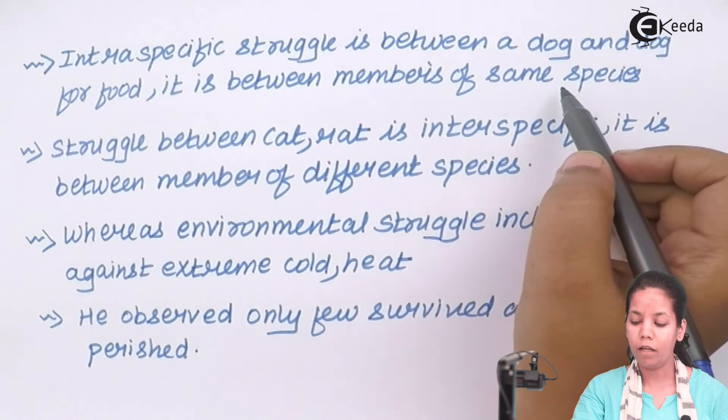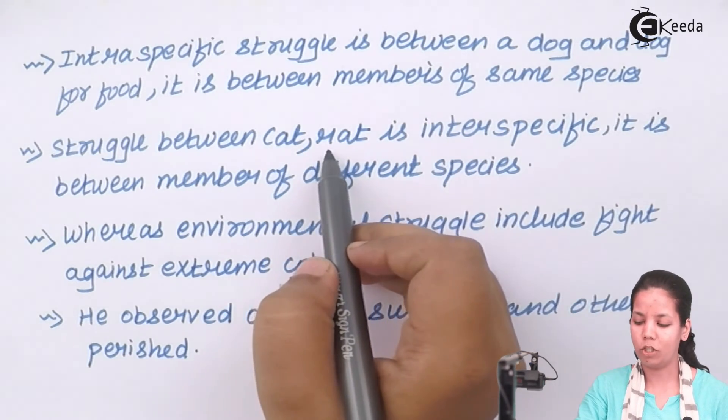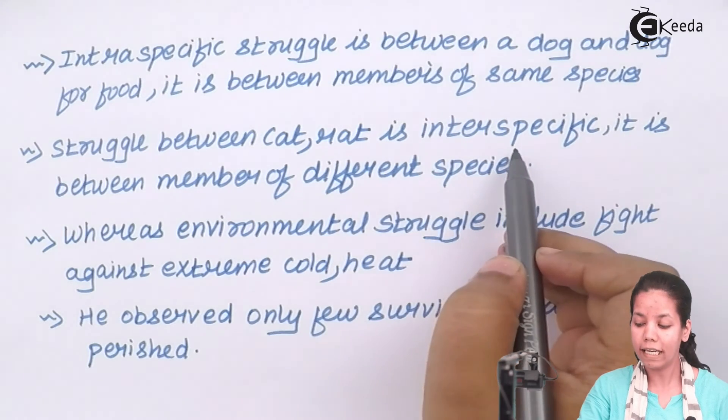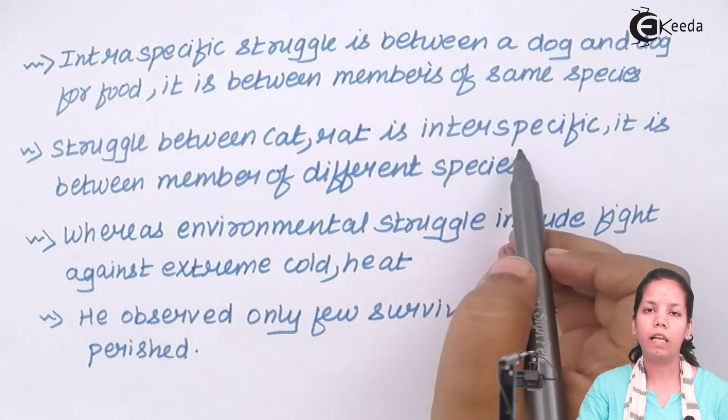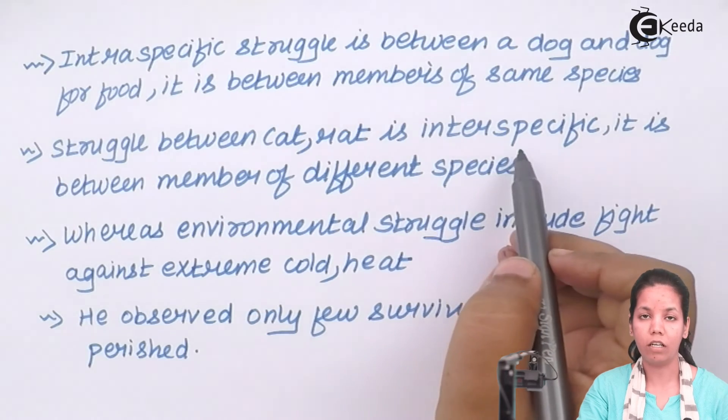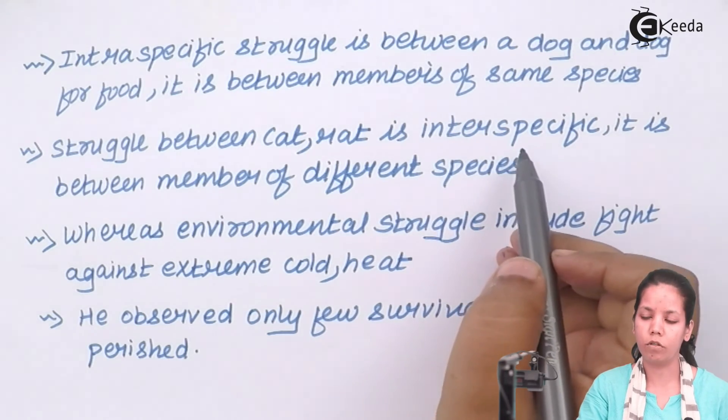Whenever there is fight between a cat and a rat, they do belong to two different species. So this is called as interspecific fight. And interspecific fight could be between a lion or a tiger for a jungle, or for a dog and a cat for food.